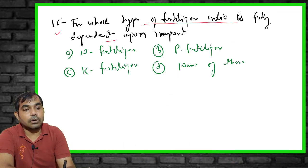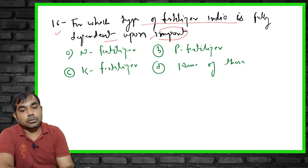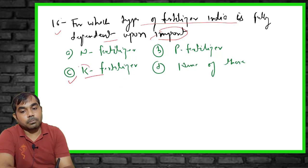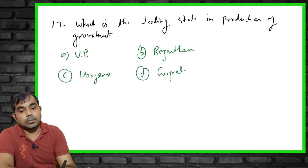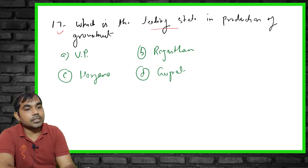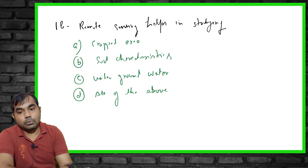The sixteenth MCQ: which type of fertilizer in India is fully dependent on import? The right answer is K fertilizer — potassium fertilizer. India is totally dependent on foreign countries for potassium fertilizer and does not manufacture it domestically. The seventeenth MCQ: which is the leading state in groundnut production? The right answer is Gujarat.